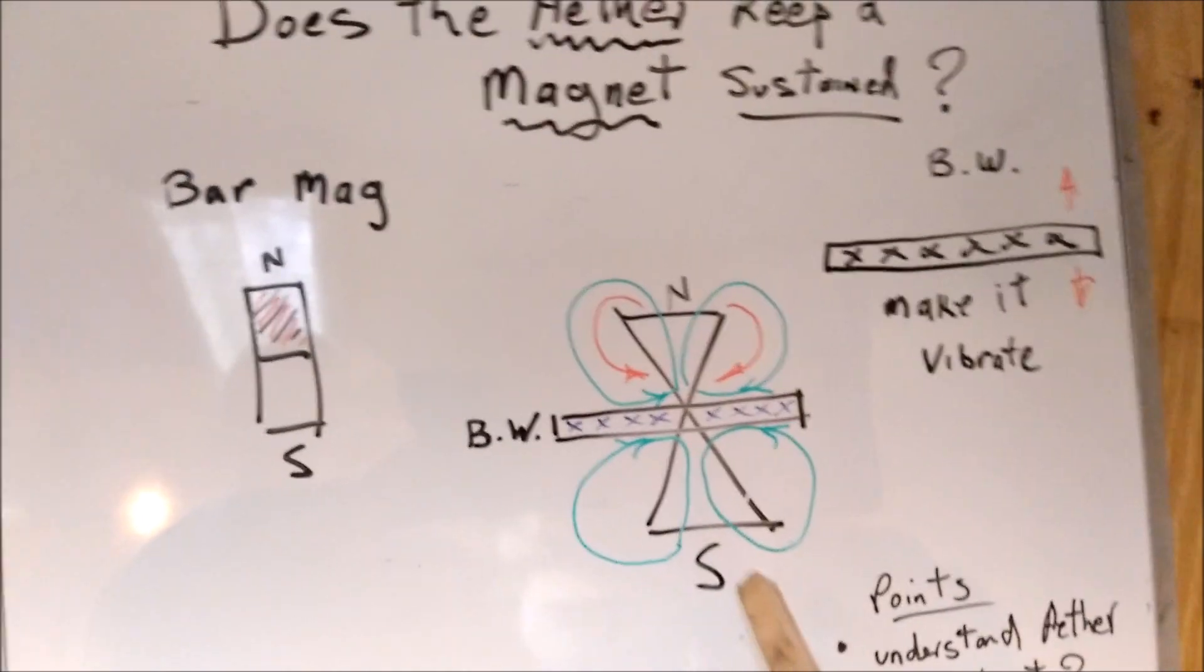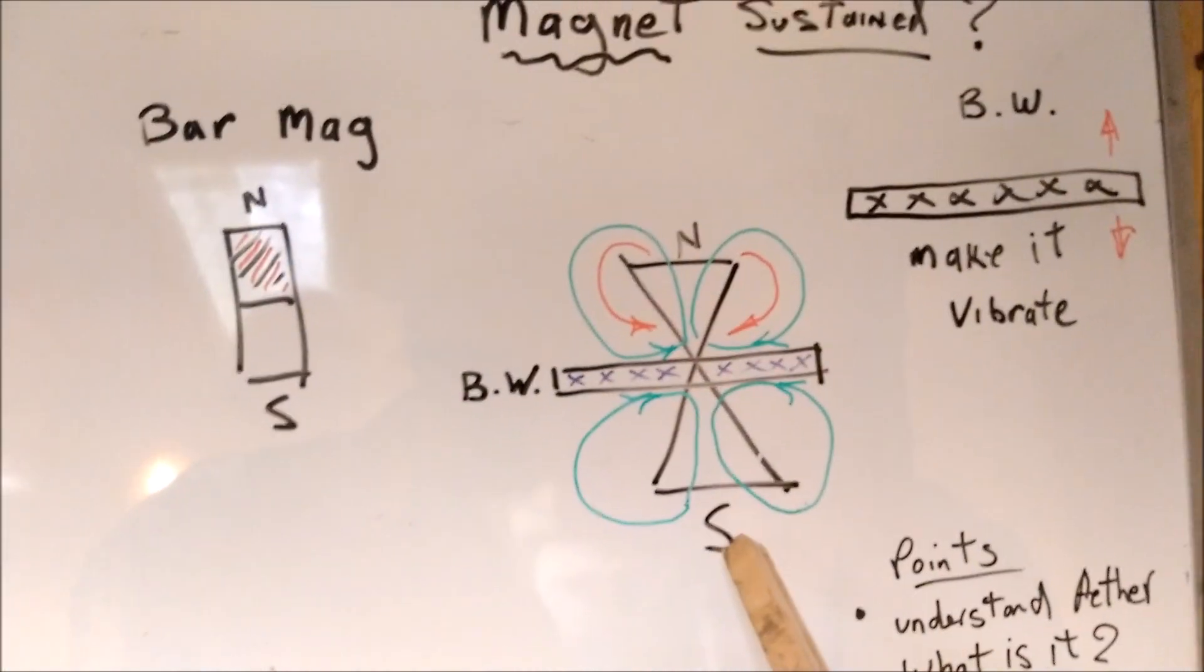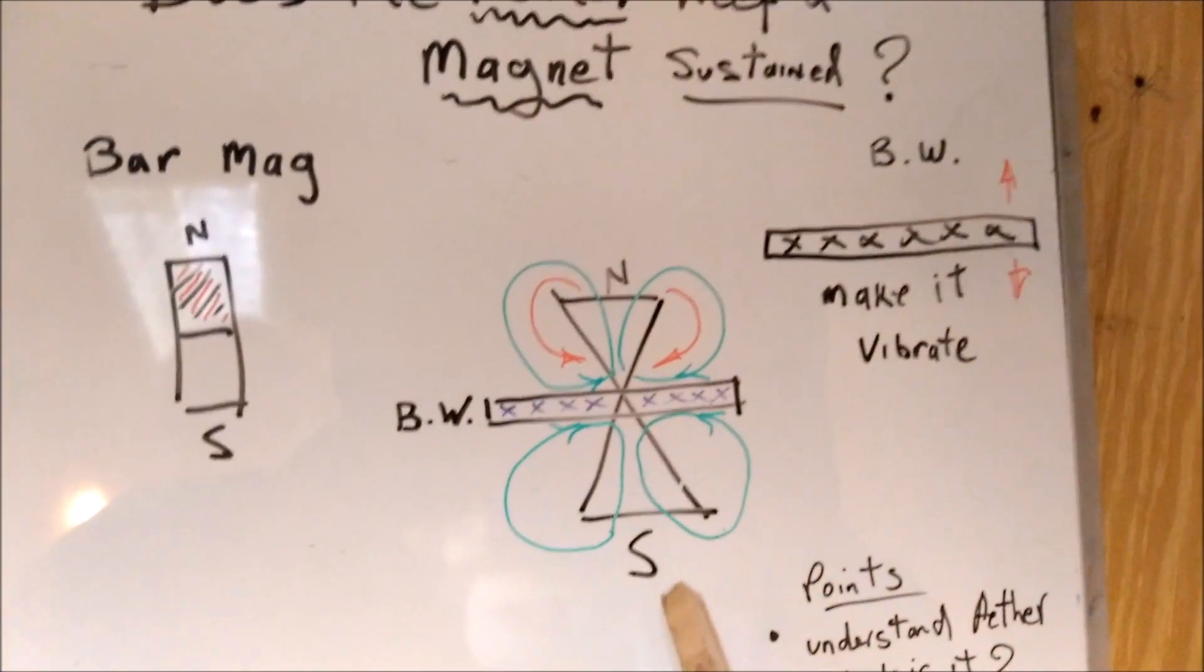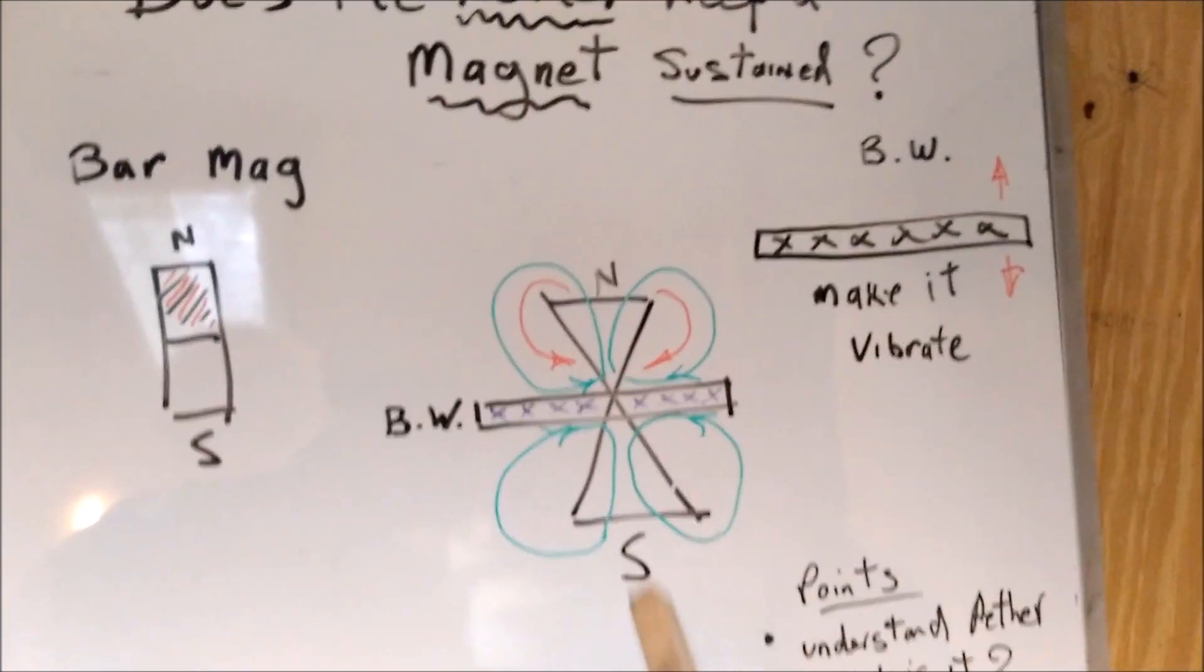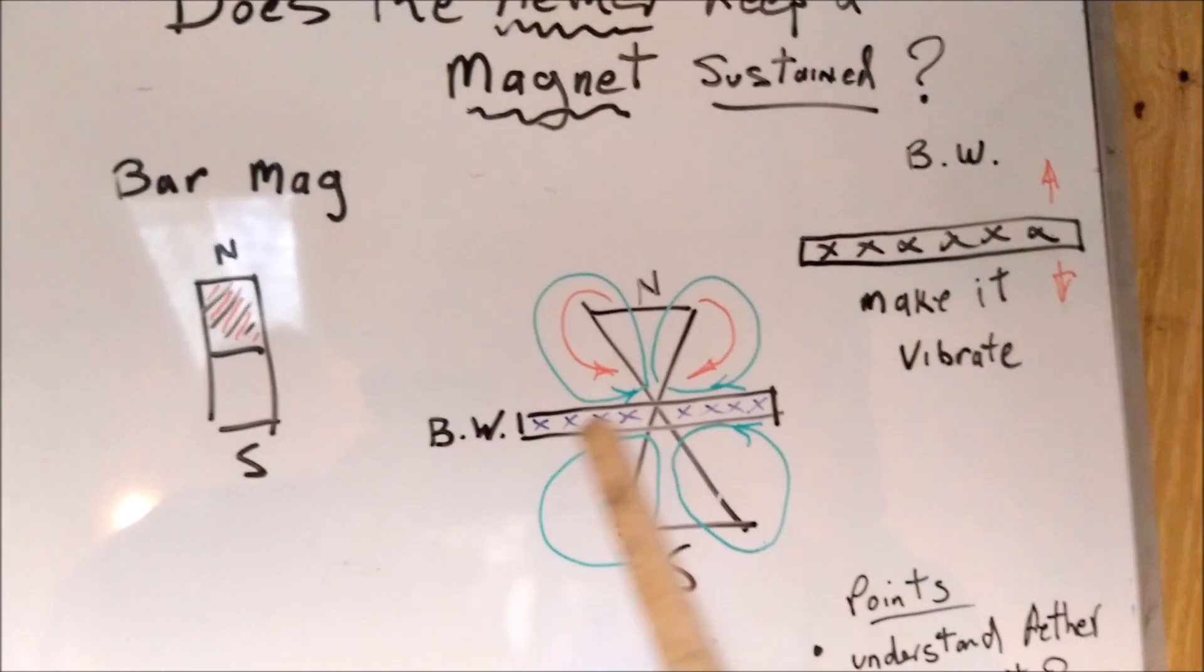I've got representation here of a magnet in graphic terms. We've got the north and the south, we call them poles, but Ken Wheeler doesn't like to call them poles. We're calling them poles for now, and the Bloch wall.